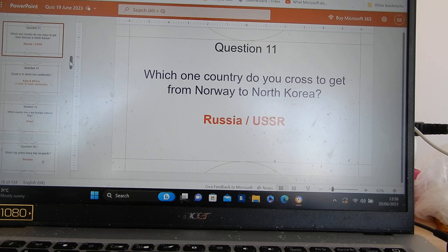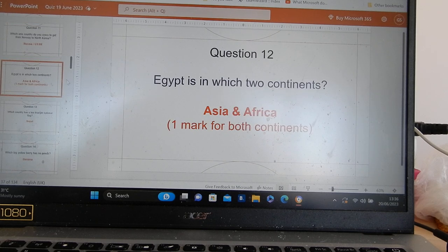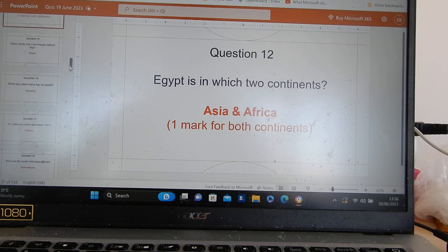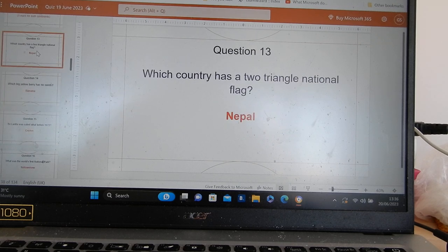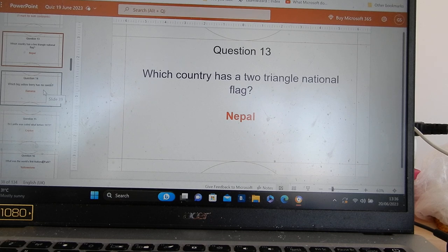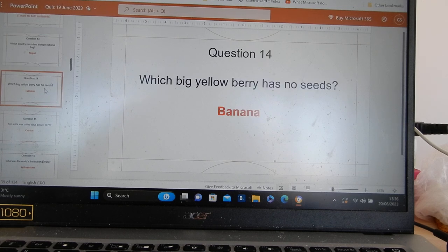Russia. If you cross Russia, I will accept USSR. If you cross Russia, you can get from Norway to North Korea. Egypt is in which two continents? Asia and Africa. One mark if you've got both. Nepal has not a rectangle or a square flag. It's got a flag made out of two triangles. Yeah, only one.